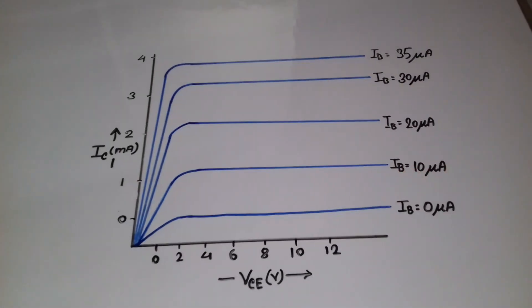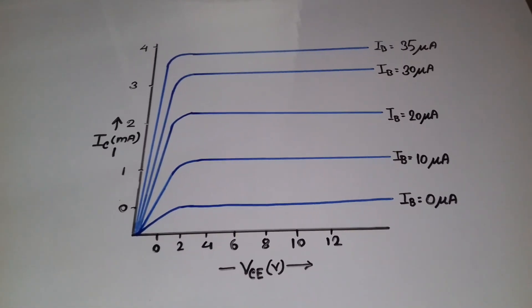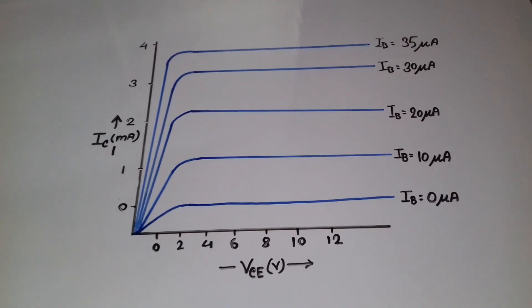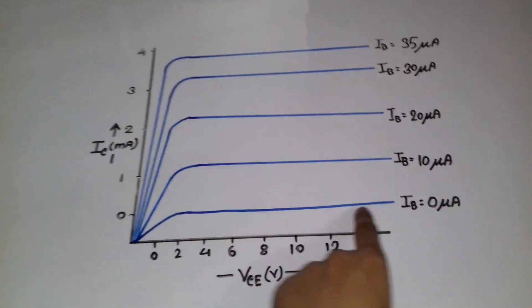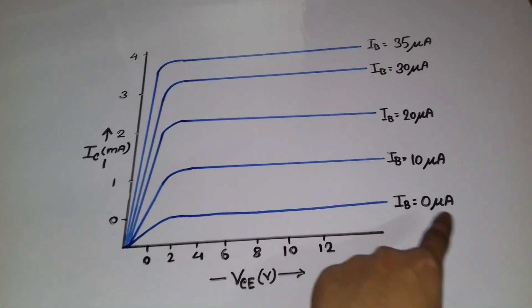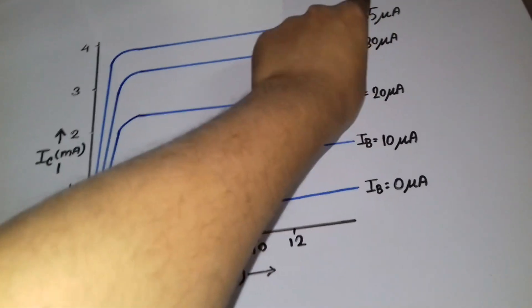This is an output characteristic curve or drain characteristic curve for an NPN transistor, plotted for different values of base current. Here you can see that this graph is plotted for base current equal to 0 microampere, this is for 10 microampere, 20, 30 and 35.